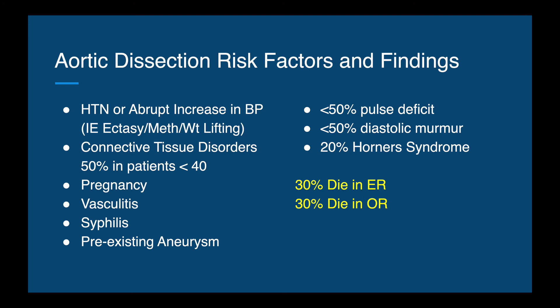Risk factors for dissection differ from aneurysm. Hypertension or an acute increase in blood pressure — such as from methamphetamine, ecstasy use, or even weightlifting — is a key risk factor. In young patients, greater than 50% of those under 40 with aortic dissection have a connective tissue disorder. Pregnancy, vasculitis, syphilis, and pre-existing aneurysm are also risk factors. Of patients with dissection, only 50% present with a pulse deficit, less than 50% with a diastolic murmur, and 20% present with Horner's syndrome. Thirty percent die in the ER, 30% die in the OR, and many die before reaching the hospital — making this an extremely deadly disease.